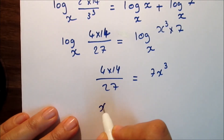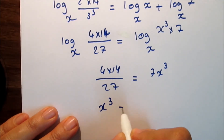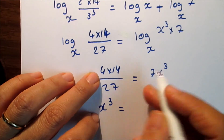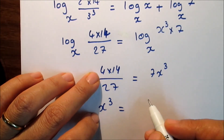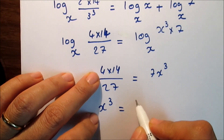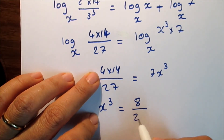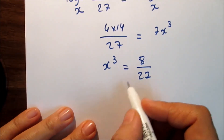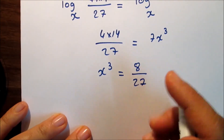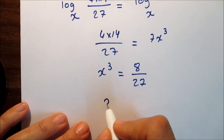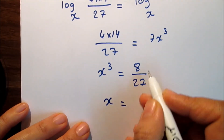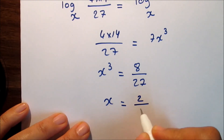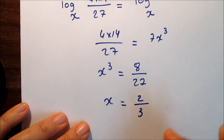Simplify: divide both sides by 7, so x cubed equals 8 over 27. Take the cube root: x equals the cube root of 8/27, which is 2 over 3. The solution set is {2/3}.